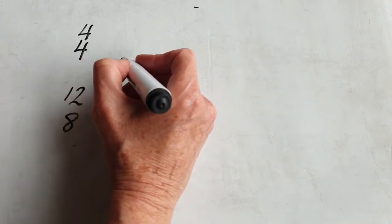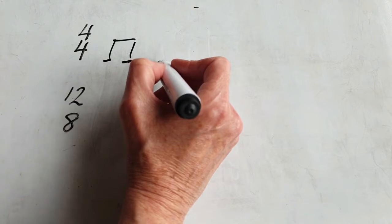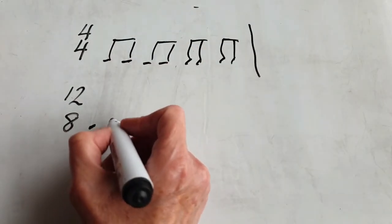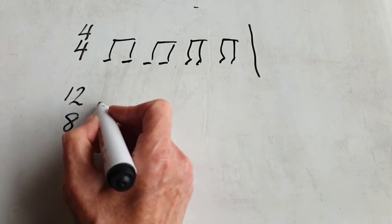The natural subdivision of 4-4 is into quavers or eighth notes. The natural division in 12-8 is four lots of three notes.